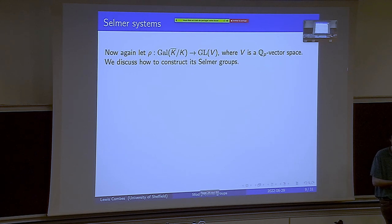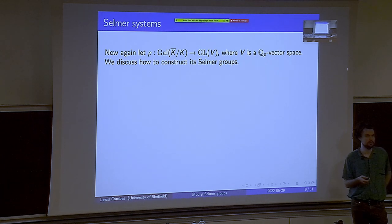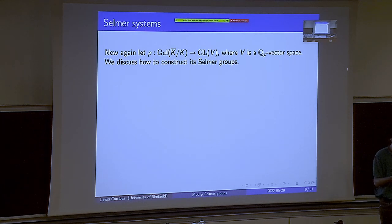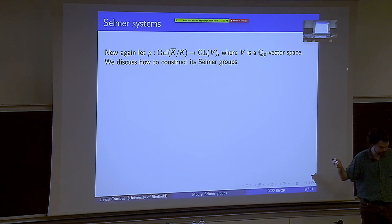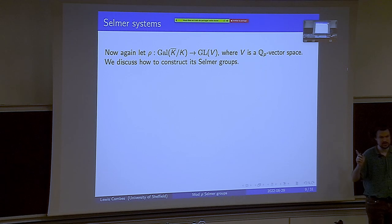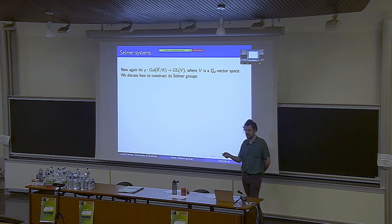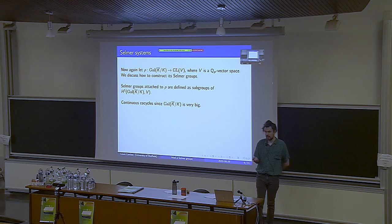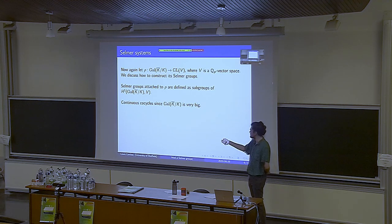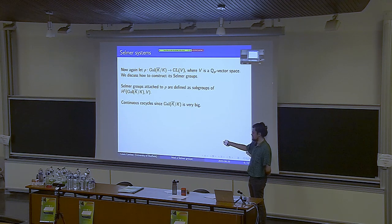This mod P L-value should have some kind of meaning, and we want to attach a Selmer group to it. I'll talk about Q_p Selmer groups first, then turn to mod P. A Selmer group is just a subgroup of H^1(G_K, V), the first group cohomology of the absolute Galois group with coefficients in V, where V gets an action via rho. This is a very big group — I think anyone who studies it will tell you they only study little pieces of it. We restrict our attention to continuous cocycles.